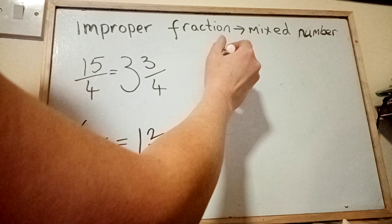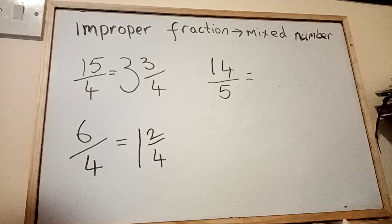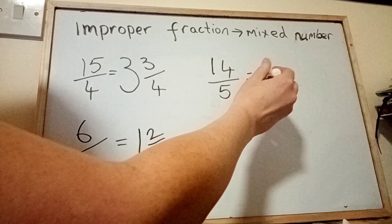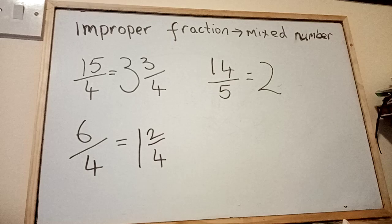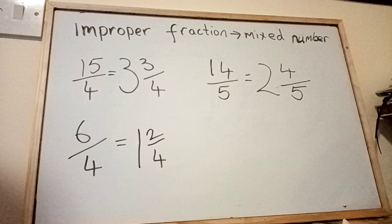Okay, so now I'm going to try another one: 14 over 5. So how many times will 5 divide into 14? It'll go in twice. What's the difference between 10 up to 14? It's 4, so 4 left over. 4 fifths. 2 and 4 fifths.